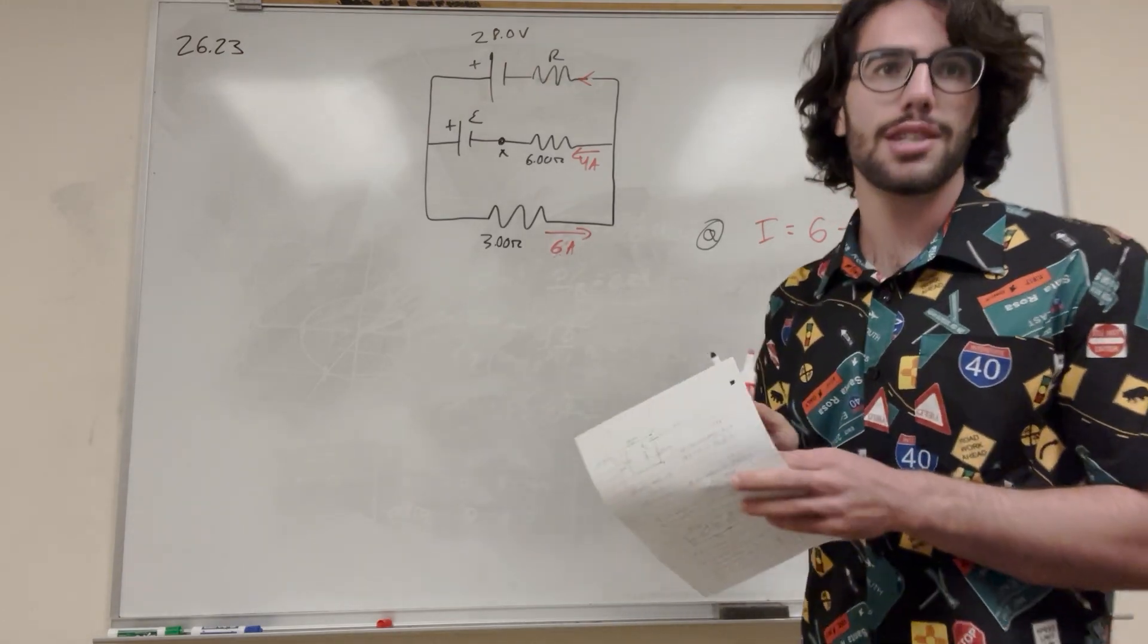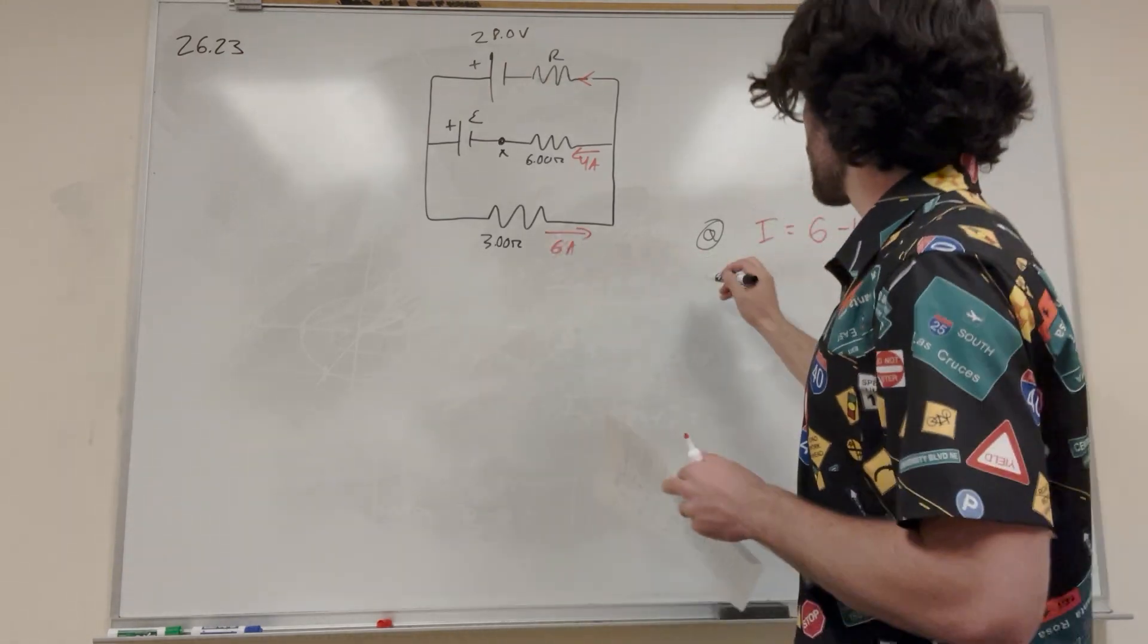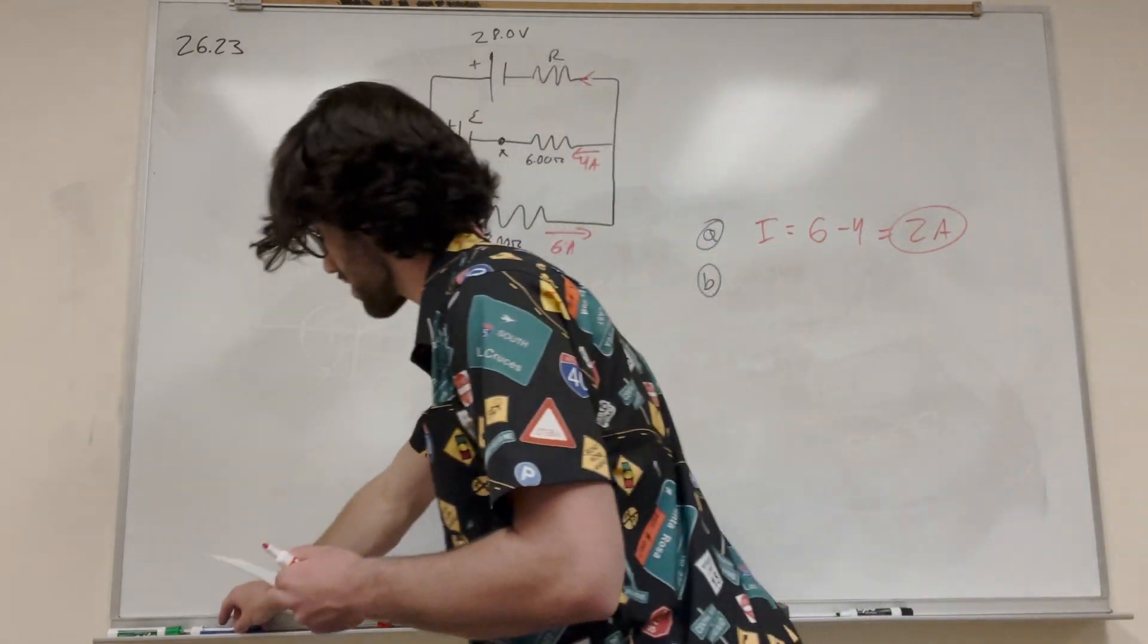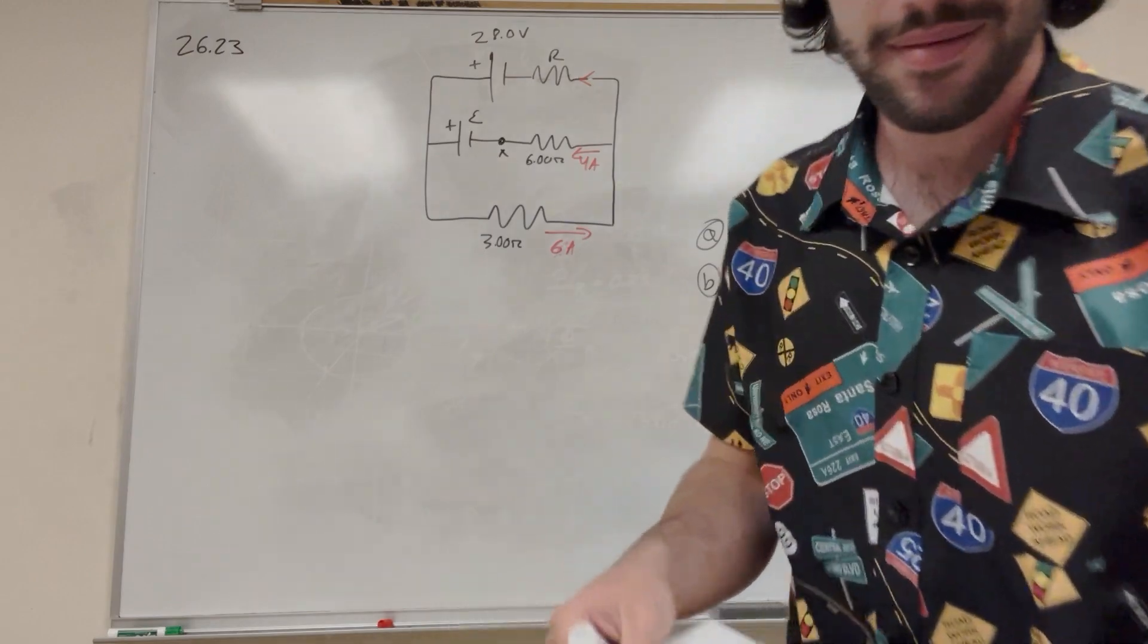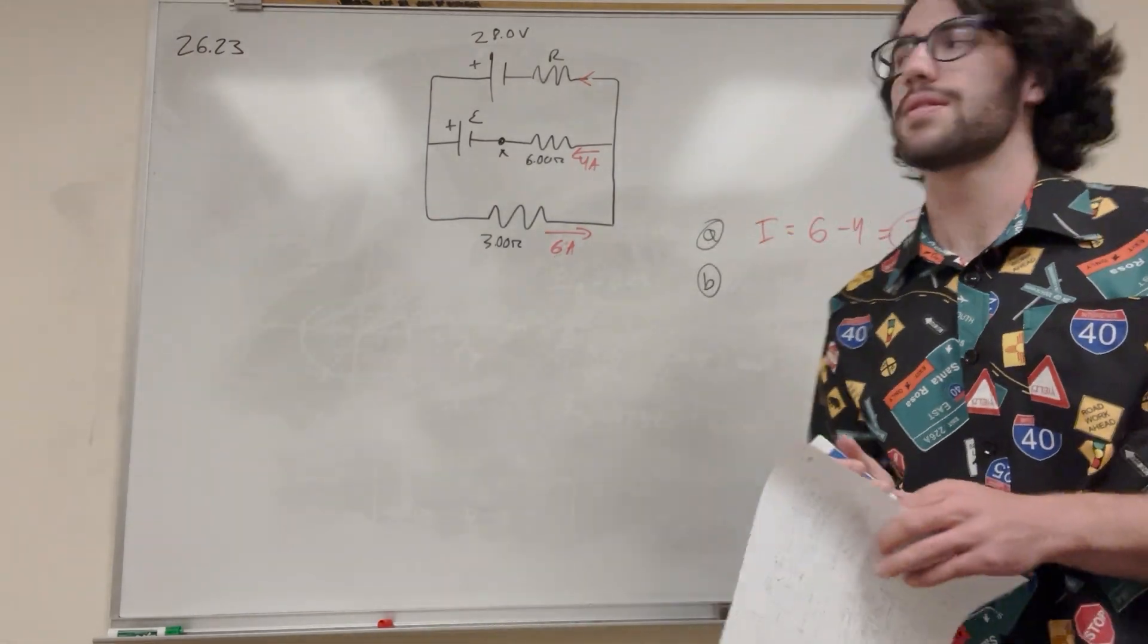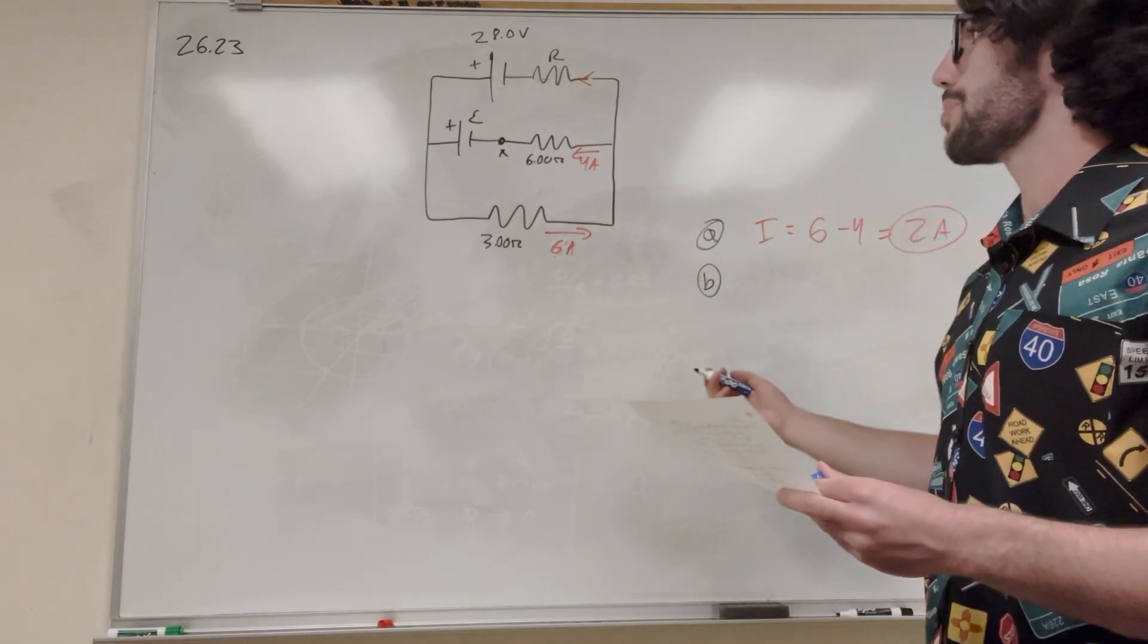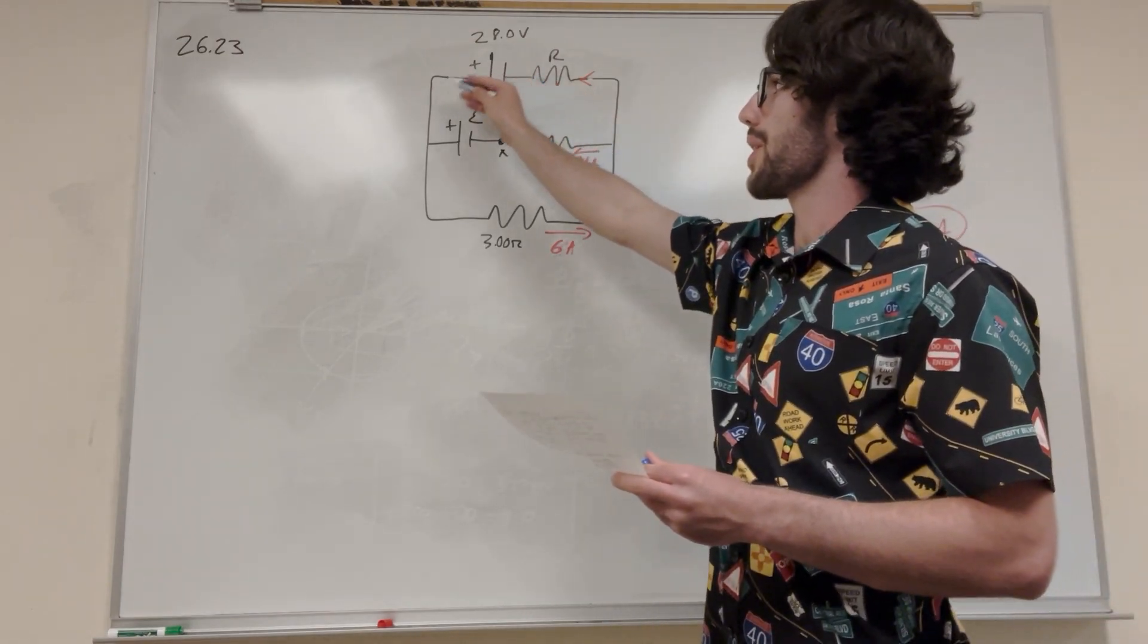So part B, there's part B asking the resistance. Okay, well, we know resistance is pretty easy, but let's go ahead and figure it out anyway. So we know that, let's go ahead and do the whole loop thing. So if we start here and we go around the loop.